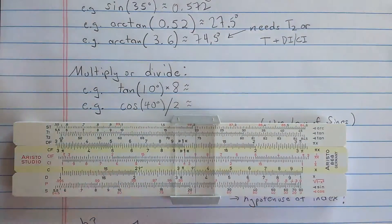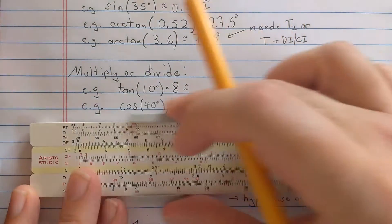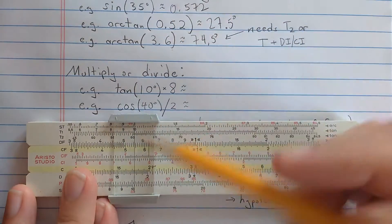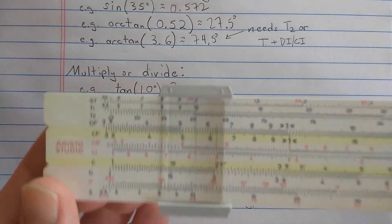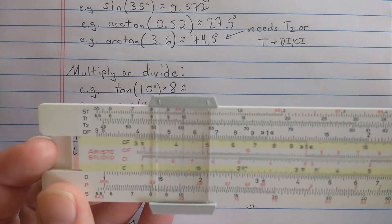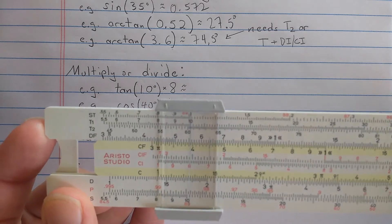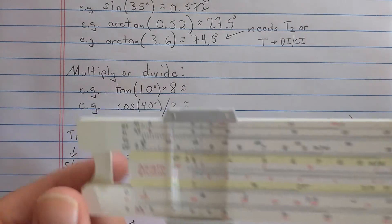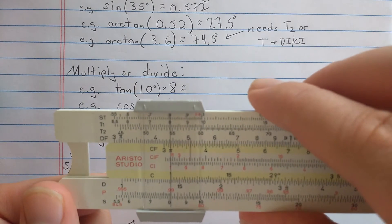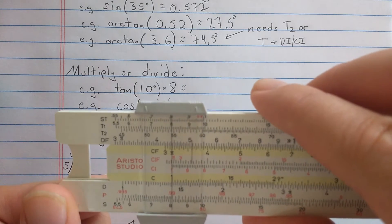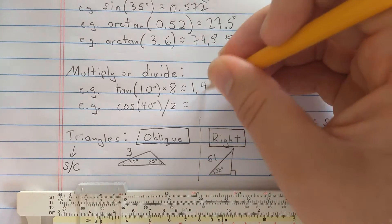One nice thing about this layout is it sets you up for multiplication or division fairly simply. See, if I go to the tangent 1 scale and find 10 degrees, then what's reading on the D scale is tangent of 10 degrees. So I could just in turn now multiply that. So let's multiply using the CI scale. So I find 8 on the CI scale. And if I come to the index, that's multiplying that tangent by 8. And I see about 1.4, looks like 1.41.